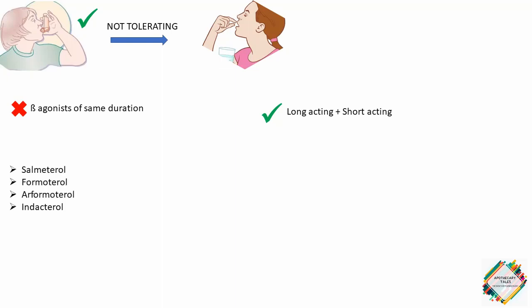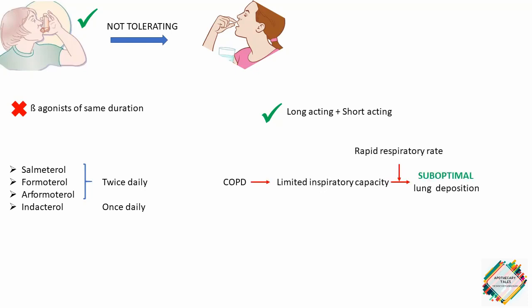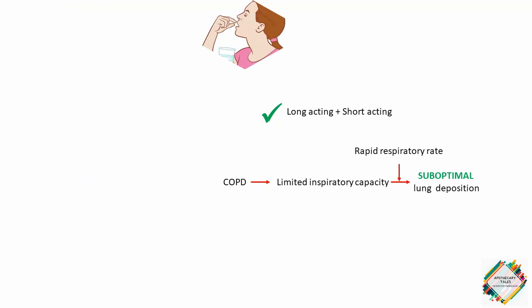Salmeterol is a long-acting beta-agonist administered twice daily. Indacaterol is a recently marketed long-acting beta-agonist administered once daily as a dry powder inhaler. These agents may also be used in combination with ipratropium bromide or tiotropium; neither agent is used on an as-needed basis for rescue therapy, although formoterol does have a rapid onset of action. Inhaler devices that require a rapid inspiratory rate may result in suboptimal lung deposition in COPD patients with limited inspiratory capacity; a metered-dose inhaler or nebulizer may be more optimal.